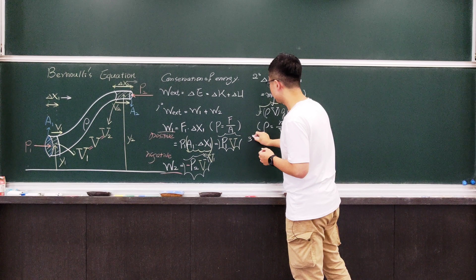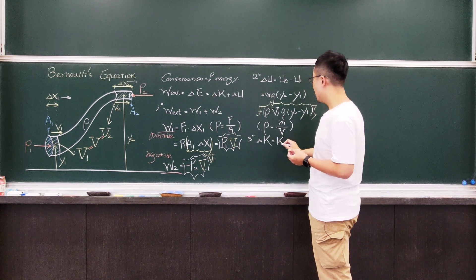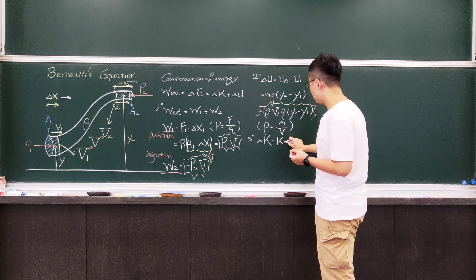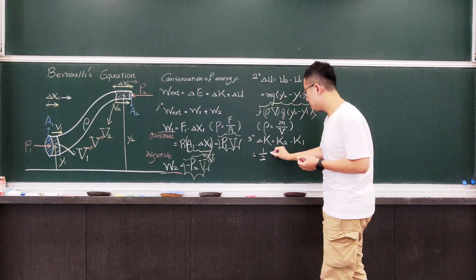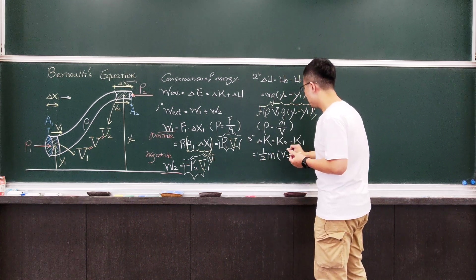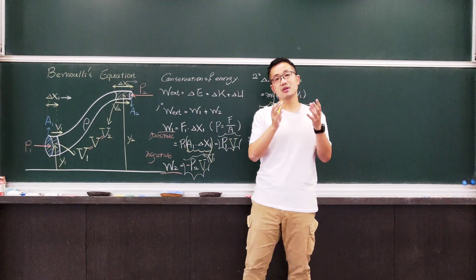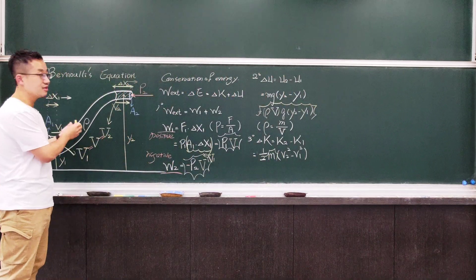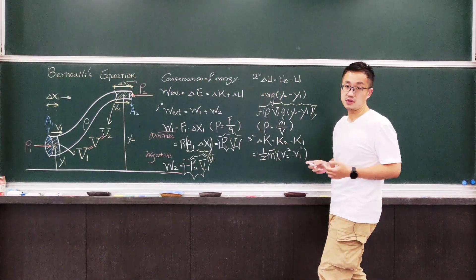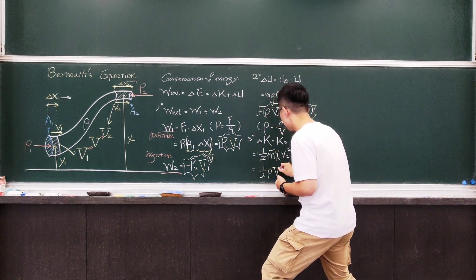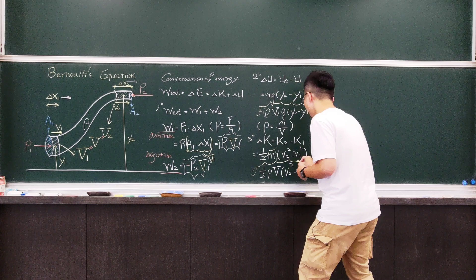The last step is to calculate the change in kinetic energy. The kinetic energy is one-half mv squared, and the change is K2 minus K1, which is one-half times mass times (v2 squared minus v1 squared). Since the volume is conserved and the density is the same, the mass can be replaced by rho times V — giving one-half times rho times V times (v2 squared minus v1 squared).